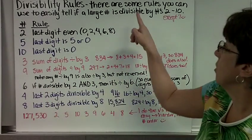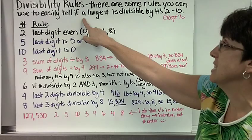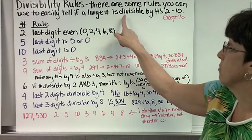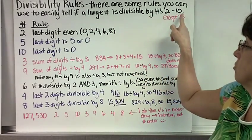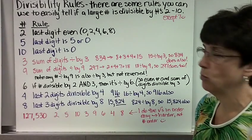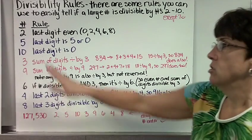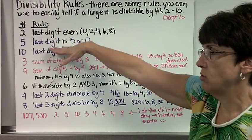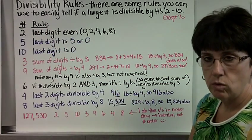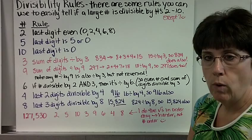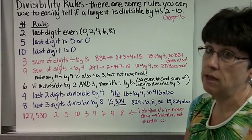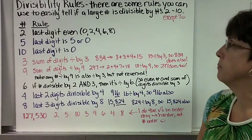Divisibility rules. There are some rules you can use to easily tell if a large number is divisible by the numbers 2 through 10, except 7. There's a rule for 7, but we're not going to do it. So here is the number, and here is the rule. You can write them all down, but why don't you let me explain them first and then write them down, because then you'll understand them better.